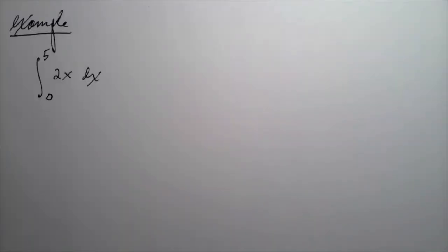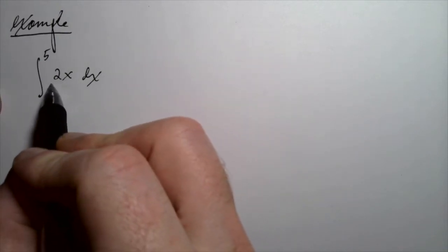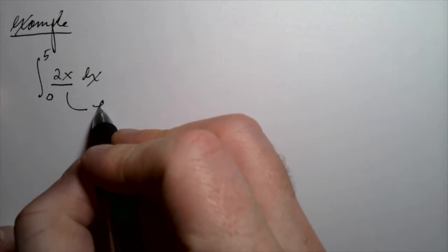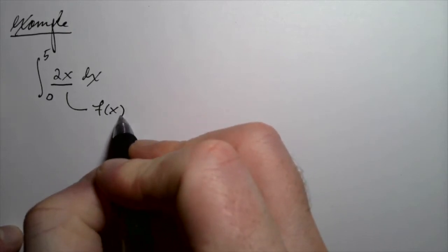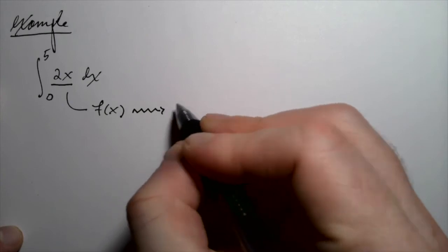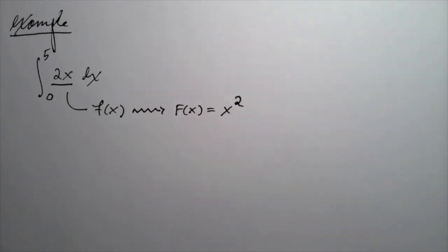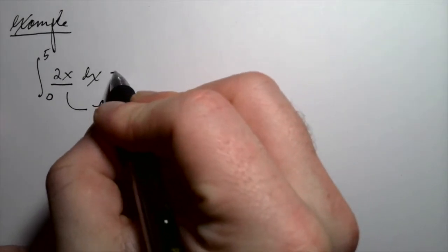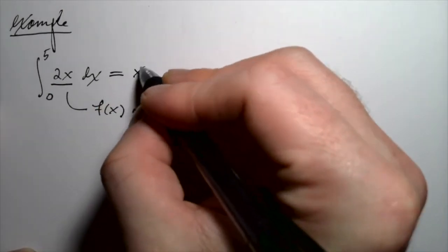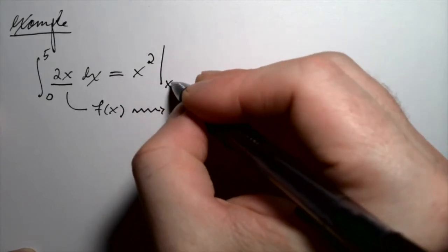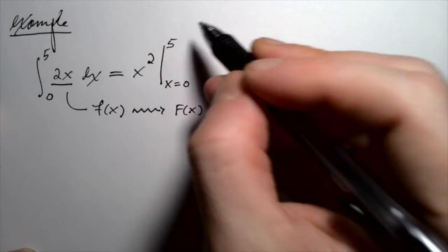Let's see the Fundamental Theorem of Calculus Part 2 in action. We're going to compute the integral of the function 2x from zero to five using the fundamental theorem. The thing between the integral sign and the dx is our f of x. We've seen an antiderivative of this function earlier: x squared is an antiderivative. One cool thing about the Fundamental Theorem Part 2 is that you don't actually need the plus c, and we'll see why in a second.